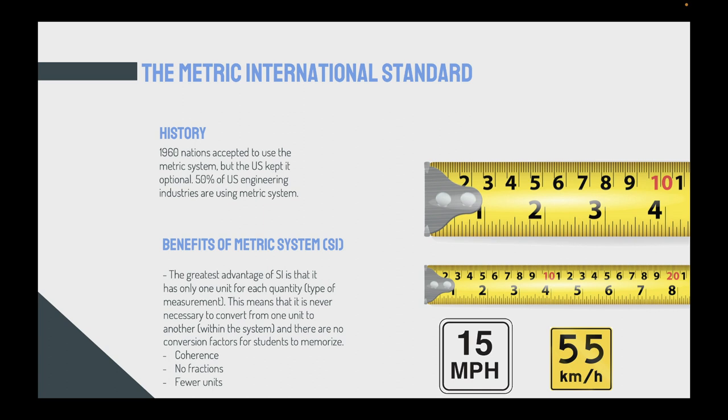We will start with the metric international standard. As a historical brief, in 1960, many nations accepted to use the metric system, but the U.S. by that time kept it optional. In many countries, they forced all their engineering firms and people to use the international standard, but the U.S. said it's optional. Today, there's 50% of U.S. engineering industries that are using metric systems. It's important for you to know the metric system.